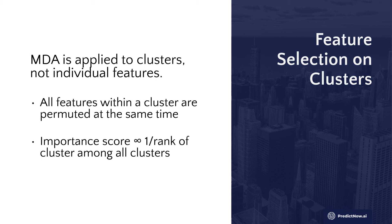After you obtain the mean decrease accuracy of these different features, the importance score attached to the features is essentially one over the rank of the cluster. You rank the clusters one, two, three, four — the most important cluster is rank one, the second most important is rank two — and the importance score of each cluster is one over its rank. Very simple, nothing fancy.